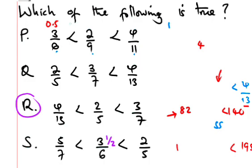Let's verify using decimals. 2/9 is approximately 0.22. 2/5 is 0.4. 3/7 is approximately 0.42. You can see that 0.4 is not less than 0.22.